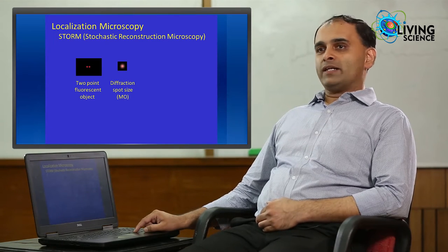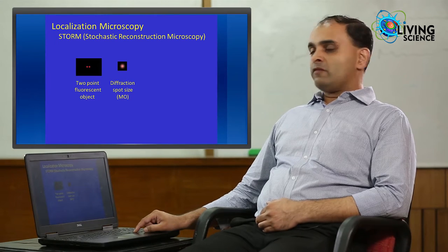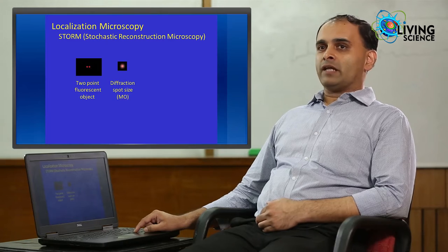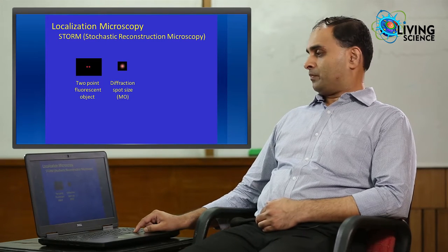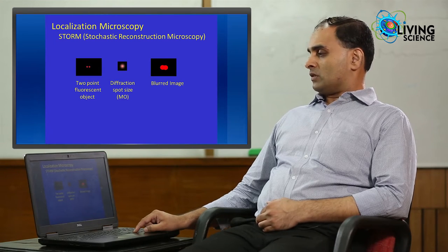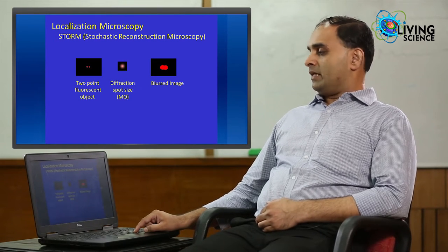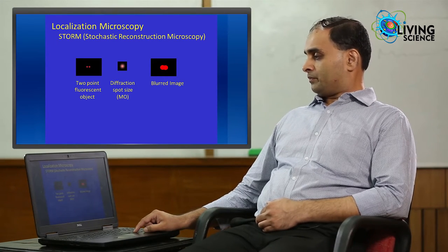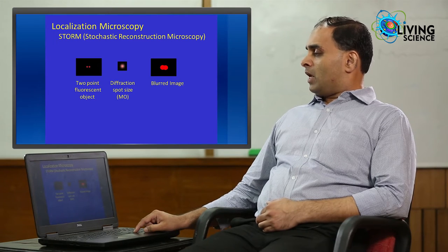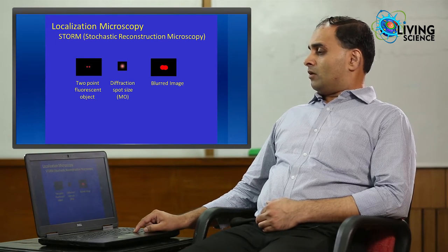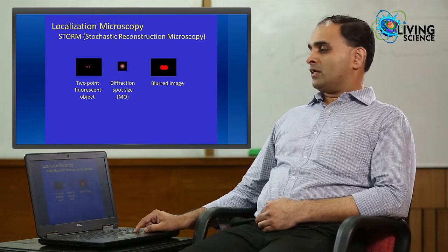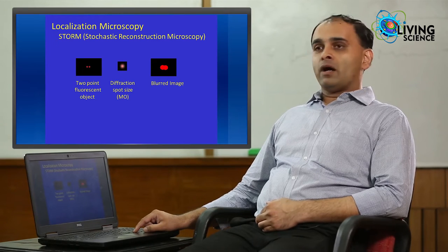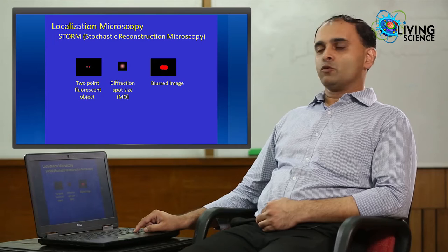The idea behind this is quite simple. Let us consider a two point fluorescent object where the two points are actually located at a distance closer than the diffraction limited spot size of the system. When both the point sources are on simultaneously and if you record them using a fluorescent microscope, you will see a blurred image as shown here. The image is blurred because the size of the diffraction spot is much larger than the separation between the two points. And so, just by looking at the blurred image, we cannot separate or resolve these two point sources.